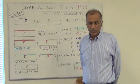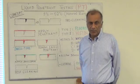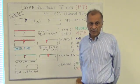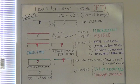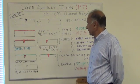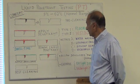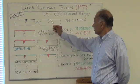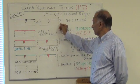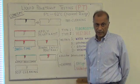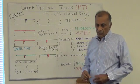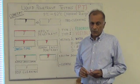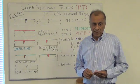Here is the basic description of the liquid penetrant testing method and the steps to conduct the inspection. The inspection with this method has to be done within a temperature range of 5 degrees centigrade to 52 degrees centigrade. The first step with this method is cleaning.